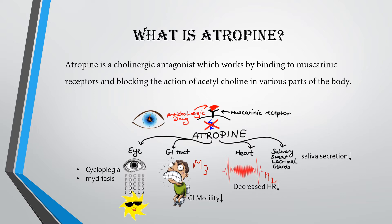When Atropine is given orally, intravenously, or topically, it performs 4 primary functions in 4 parts of the body. In the eye, it results in cycloplegia, which means the lens loses its ability to focus and accommodation is relaxed, which can be used for accurate refraction. It also results in mydriasis, meaning it dilates the pupil.